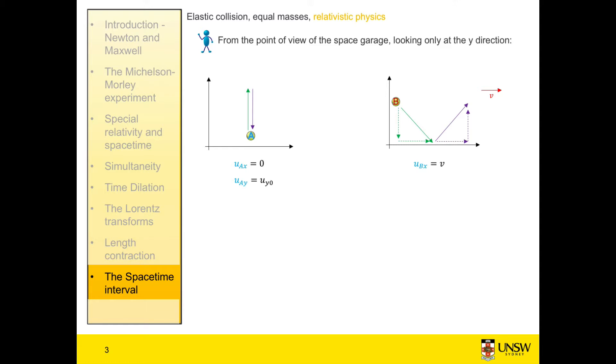And the velocity of the y component, given by the Lorentz transform, with the initial velocities u', as shown on the previous slide, is equal to negative u_y_0 divided by gamma. So these are the velocities of the two balls as viewed by the mechanic.